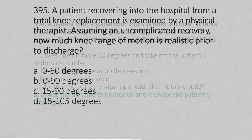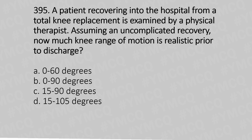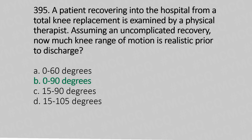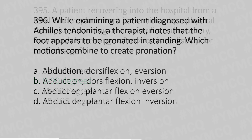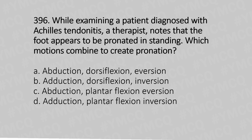Question 395: A patient recovering in the hospital from a total knee replacement is examined by a physical therapist. Assuming an uncomplicated recovery, how much knee range of motion is realistically expected prior to discharge? Option A: 0–60 degrees. Option B: 0–90 degrees. Option C: 15–90 degrees. Option D: 15–105 degrees. The answer is Option B: 0–90 degrees.